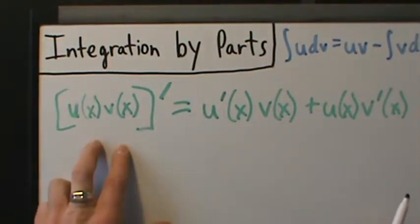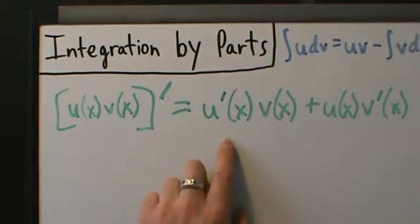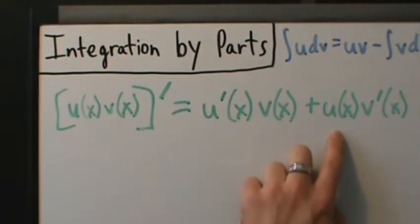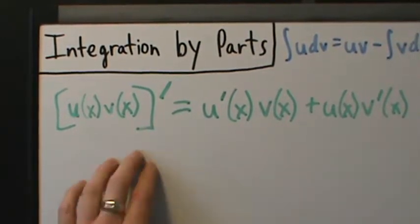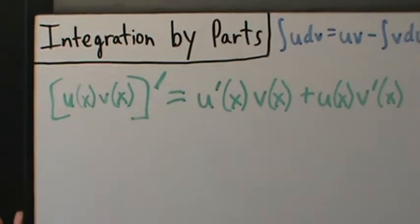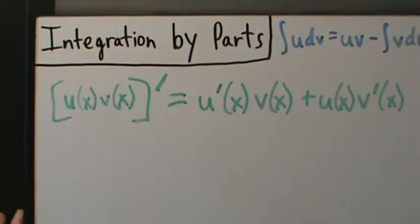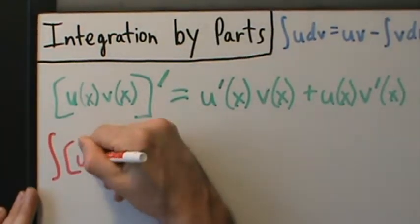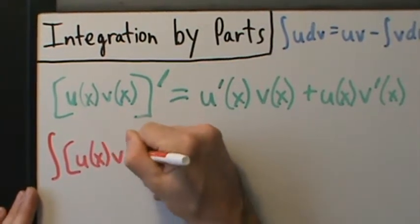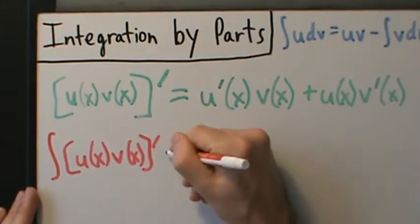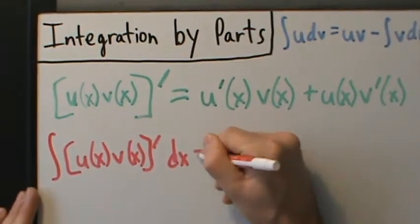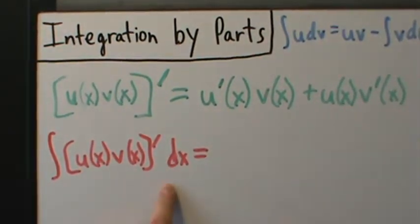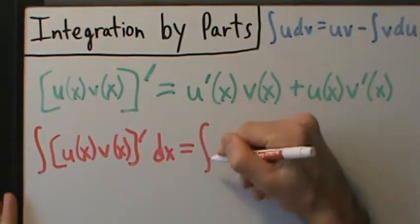In other words, the derivative of a product is the derivative of the first times the second, plus the first times the derivative of the second. So now let's go ahead and integrate both sides — we've got to have that dx on there. Our variable is x, so we're integrating both sides with respect to x.